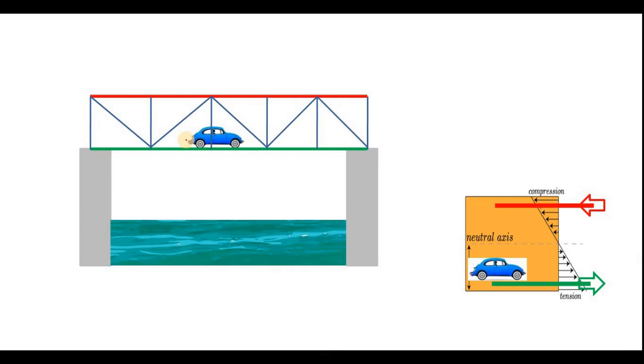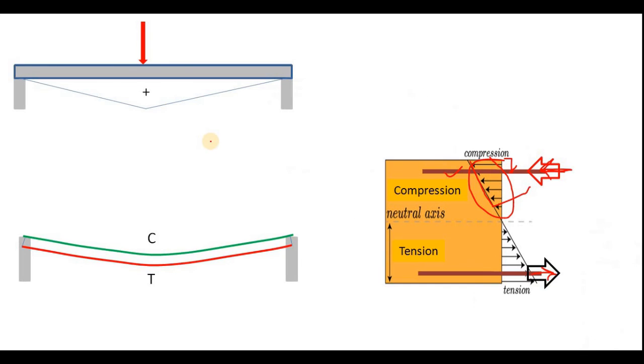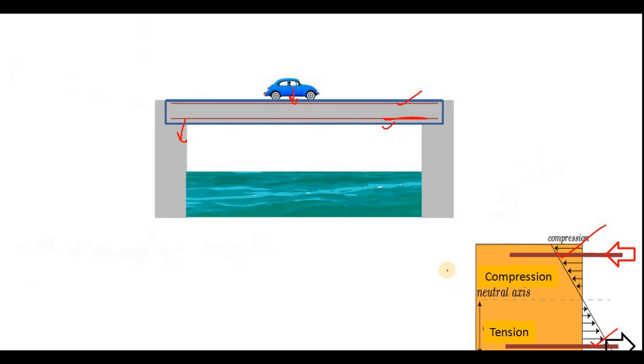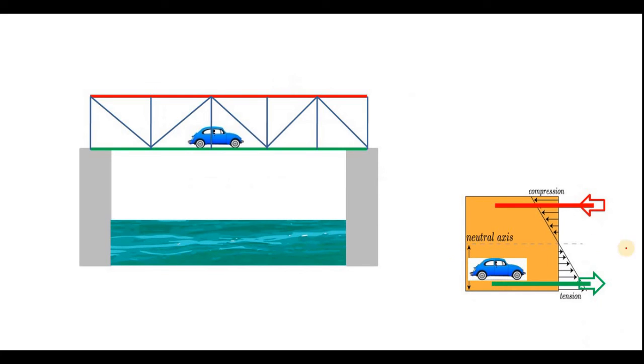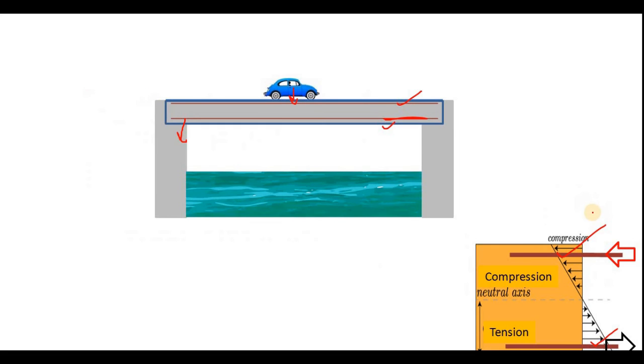Now what if instead of concrete girder, there is a steel truss like this. Similarly, you applied load and the load has deflected this structure. Say this is the truss. And for that, there has been developed a tension force and also a compression force. Let's say this is the resultant tensile force and this is the resultant compressive force.